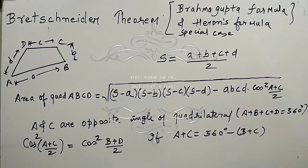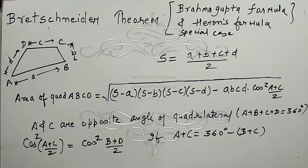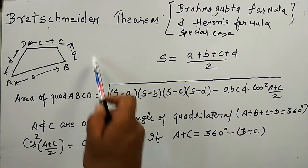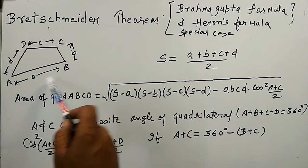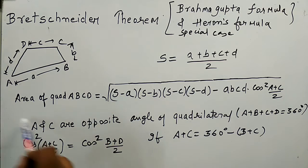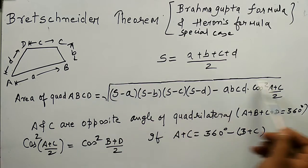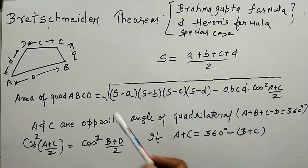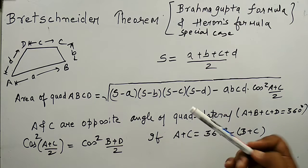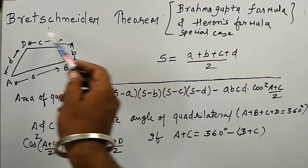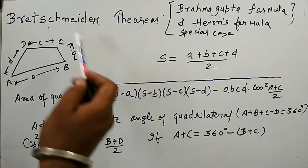Hello friends, in this video we are going to see the special cases of Bretschneider's theorem. Bretschneider's theorem is used for calculating the area of any quadrilateral with sides A, B, C, D. The formula is: Area = √[(S−A)(S−B)(S−C)(S−D) − ABCD·cos²((A+C)/2)], where S is the semi-perimeter of the quadrilateral.